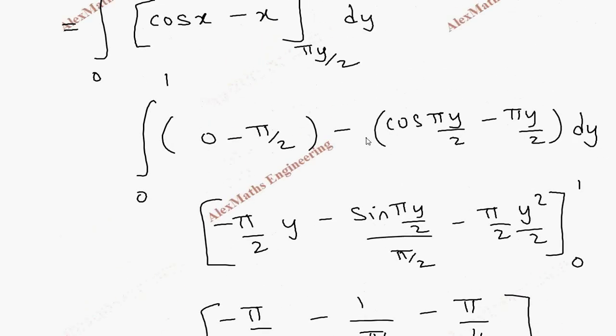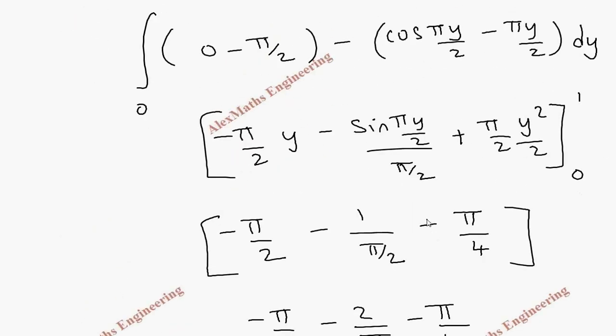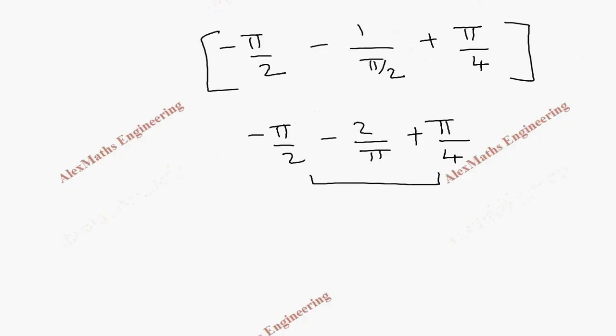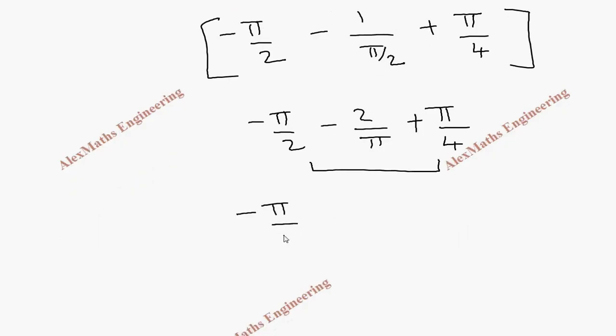And once again this is minus pi by 2. This is minus 2 by pi minus pi by 4. And this part is when we take the minus sign inside, this is plus actually. So even here it is plus. Here it is plus. When we combine these two it will become minus pi by 4. So minus pi by 4 minus 2 by pi. We take the minus sign common. We get pi by 4 plus 2 by pi.